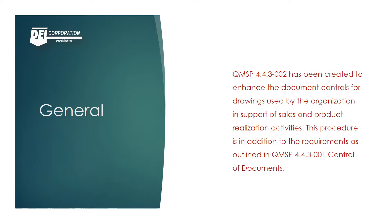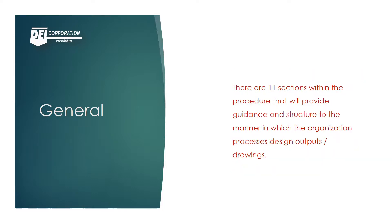QMSP 4.4.3-002 has been created to enhance the document controls for drawings used by the organization in support of sales and product realization activities. This procedure is in addition to the requirements outlined in QMSP 4.4.3-001 Control of Documents. There are 11 sections within the procedure that will provide guidance and structure to the manner in which the organization processes design outputs or drawings.